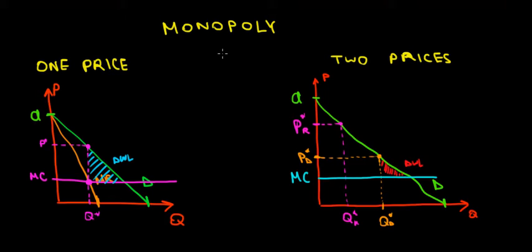We have two cases: in one case we charge one price for the entire market, in another case we charge two prices because we want to expand the market. When we have just one price, we have our demand — this green line — which has the shape of A minus B times Q, just the regular shape of a line. As a monopolist, we maximize profit when marginal revenue equals marginal cost. The marginal revenue is twice as steep, which is this orange line.